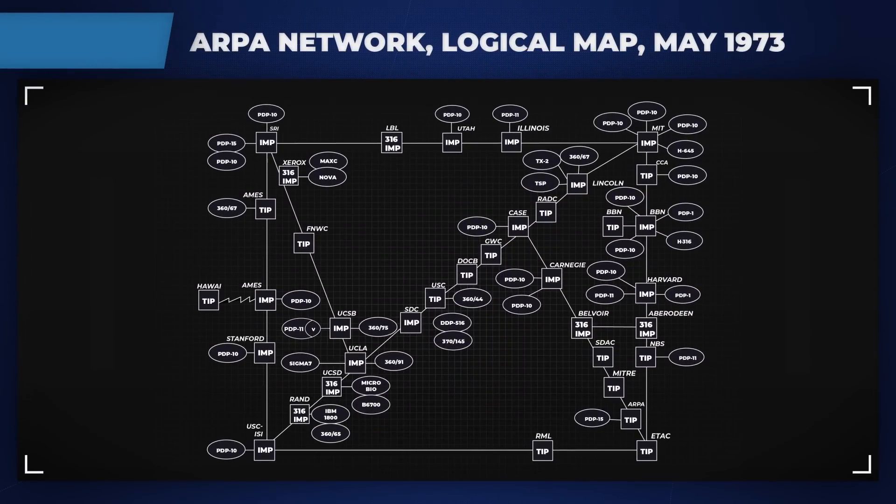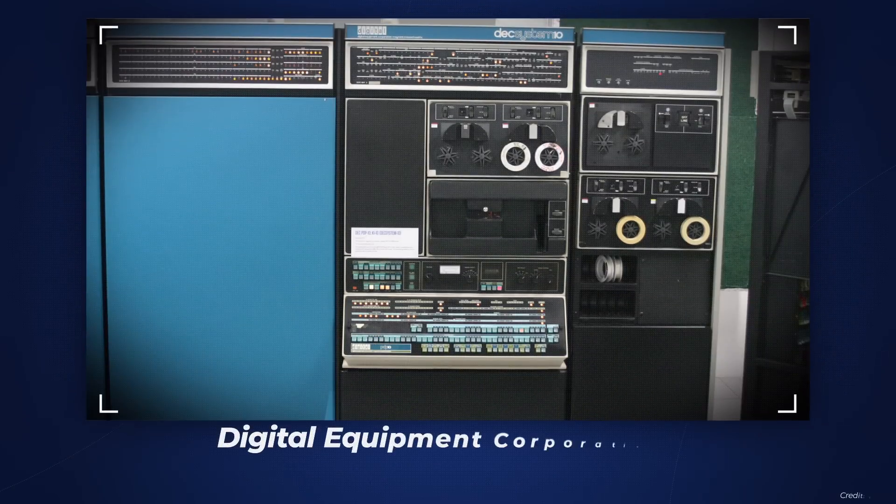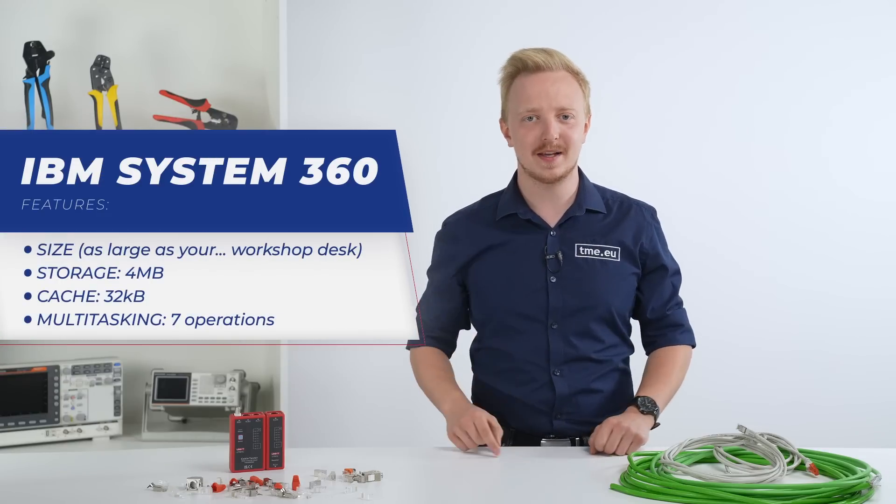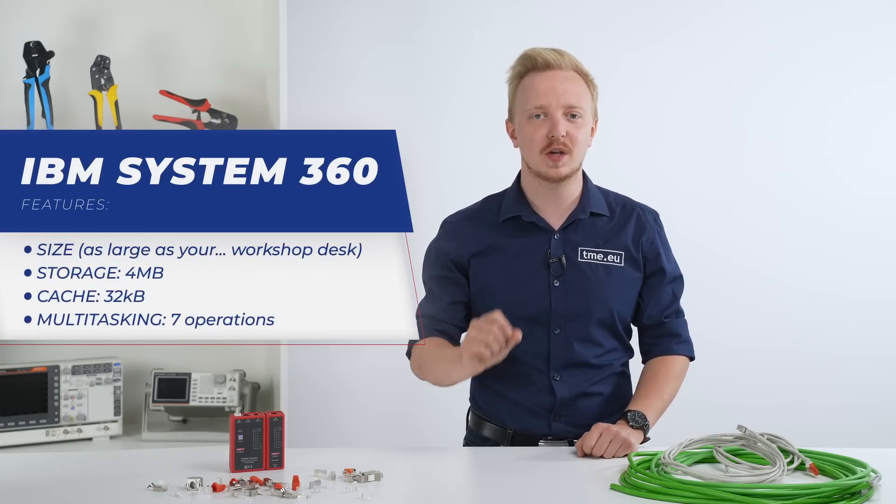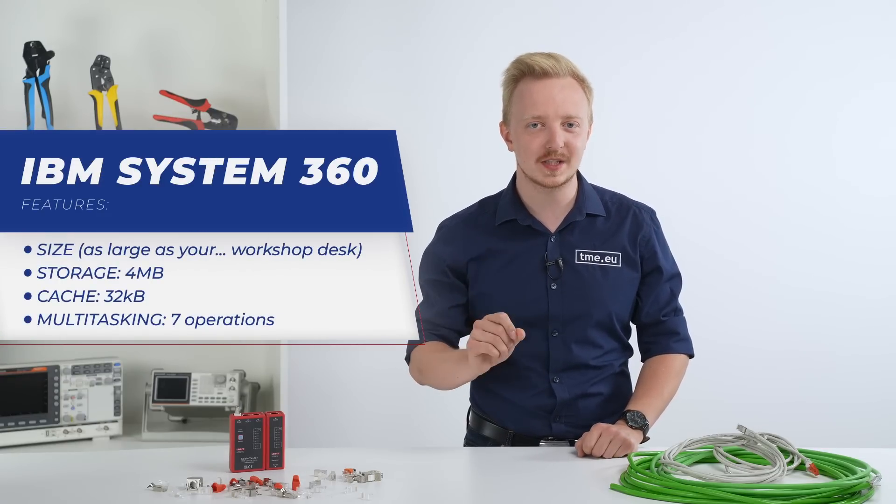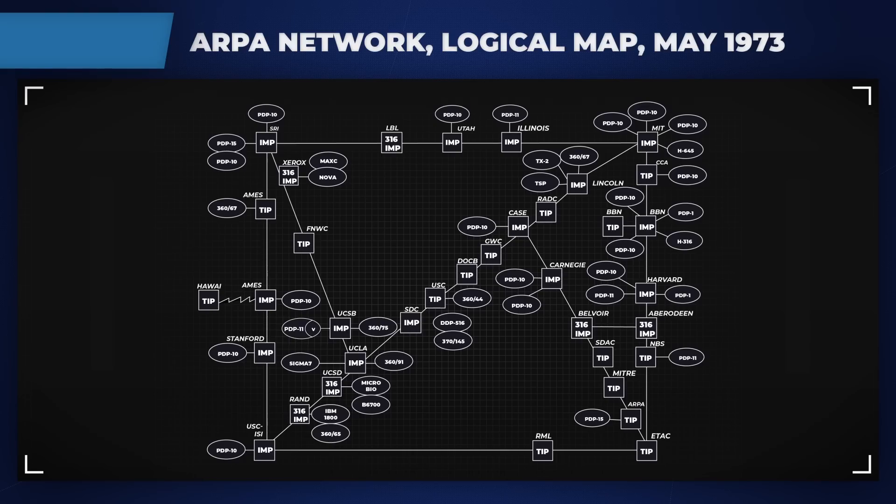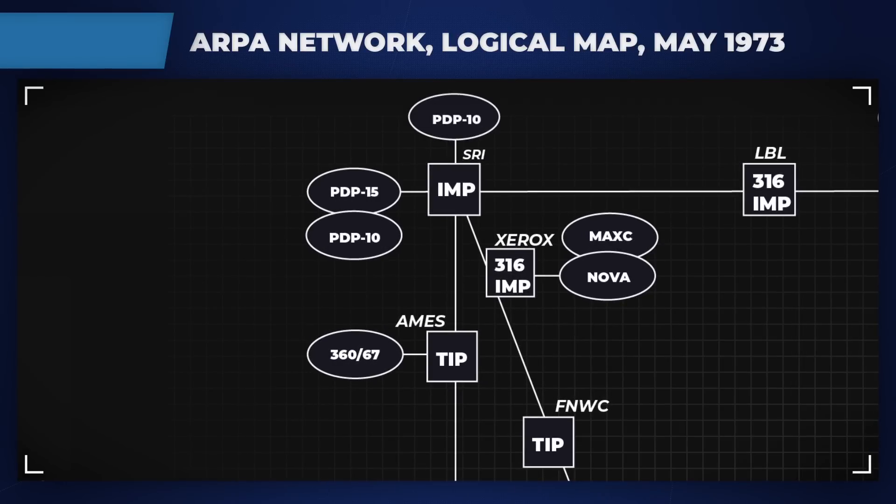At this stage of the network it was mostly used by engineers and scientists to share their findings and get access to the supercomputers like the PDP-10 or the IBM System 360 that has 4 MB of memory, 32 KB cache and can process up to 7 operations at a time. At the top left of the logical map you can see Xerox. This is the connection that Mr. Robert Metcalfe was responsible for.